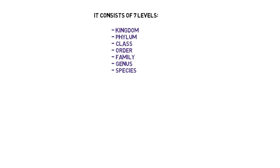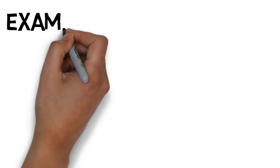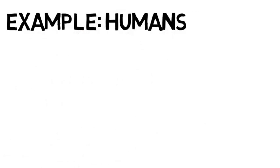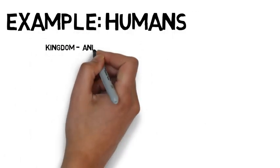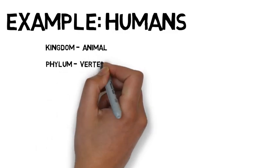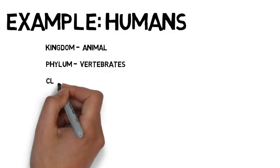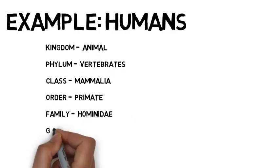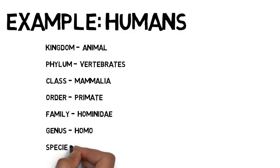Let's take a simple example — Humans. Kingdom: Animal. Phylum: Vertebrates. Class: Mammalia. Order: Primate. Family: Hominidae. Genus: Homo. Species: Sapiens.